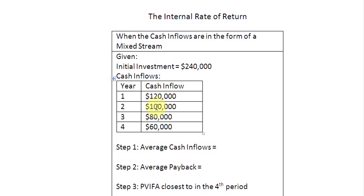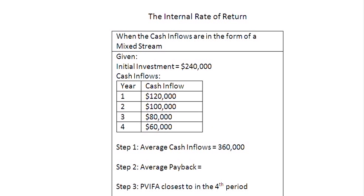Step one would be to find out the average cash inflows. We are going to add up all these numbers and then divide by the number of years, which is four. So $120,000 plus $100,000 is $220,000, plus $80,000 is $300,000, and plus $60,000 gives you $360,000. Dividing by 4 gives us an average annual cash flow of $90,000.